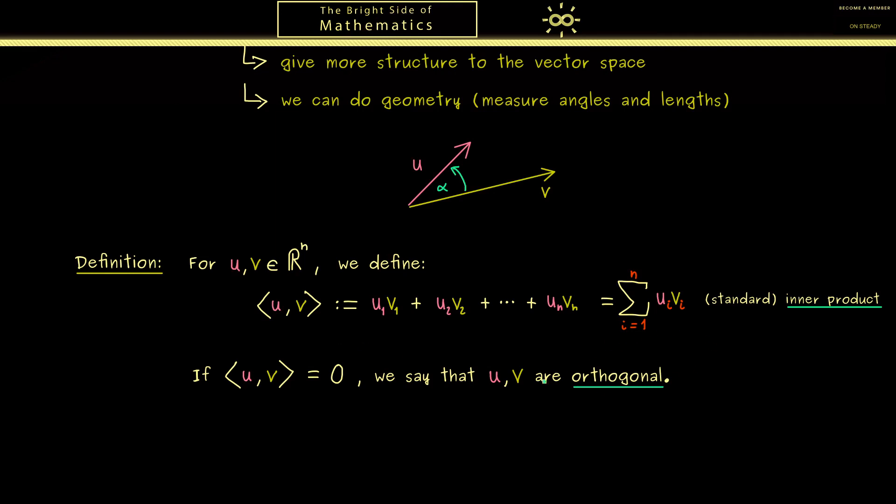In fact with this definition we get the usual geometry of R^2 and R^3. So this geometry is something you might already know very well. But now we can generalize it to R^n, so even to higher dimensions than just 2 and 3.